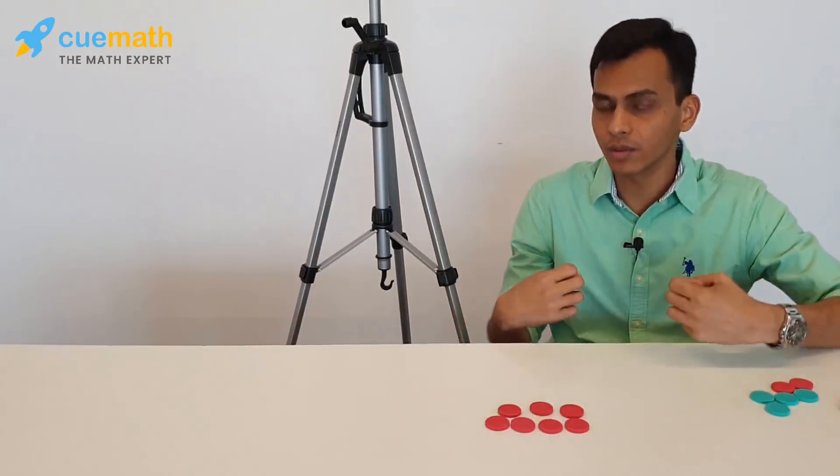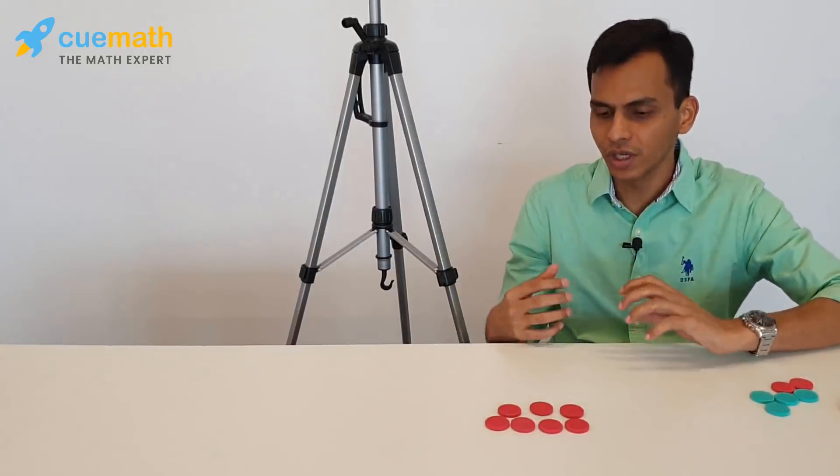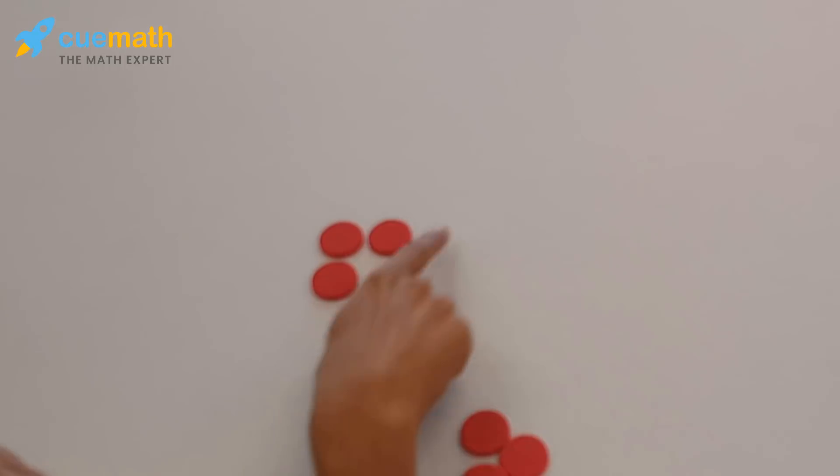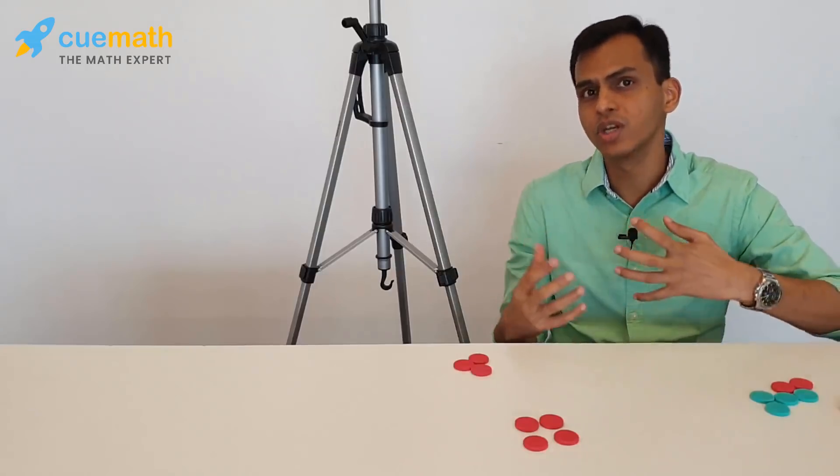So you've got 7 counters. If we subtract 3, I'm going to take 3 away. Taking 3 away, I'm left with 4 counters. So 7 minus 3 gives me 4. This helps children understand subtraction.